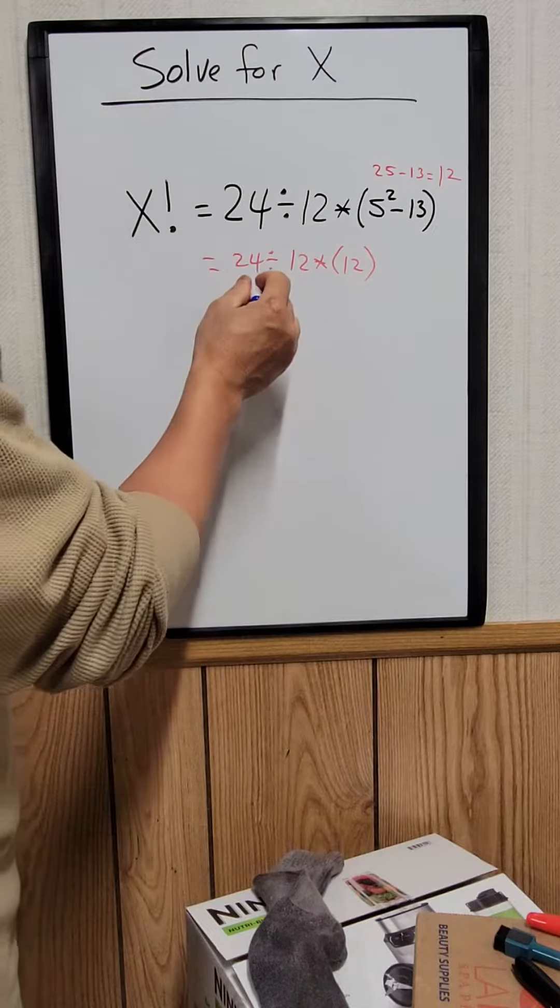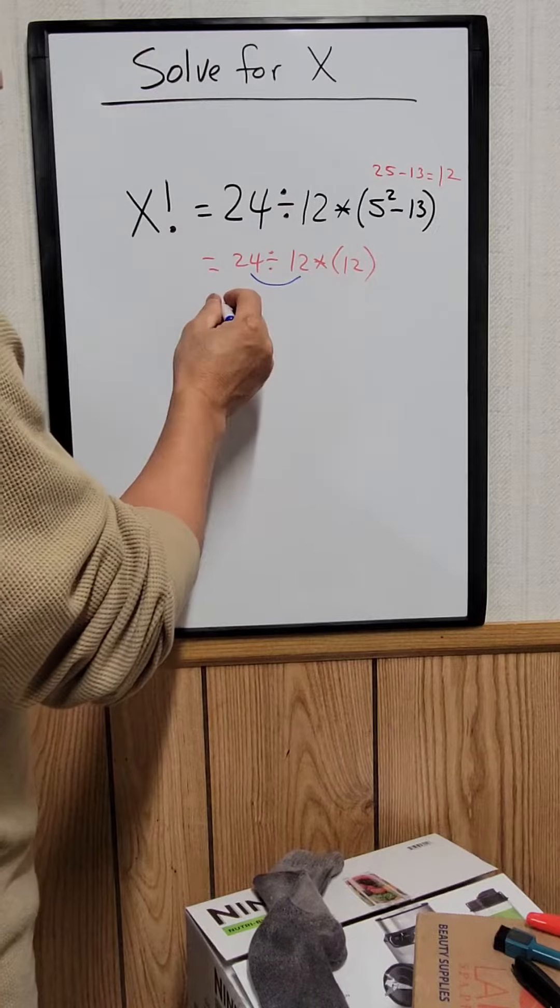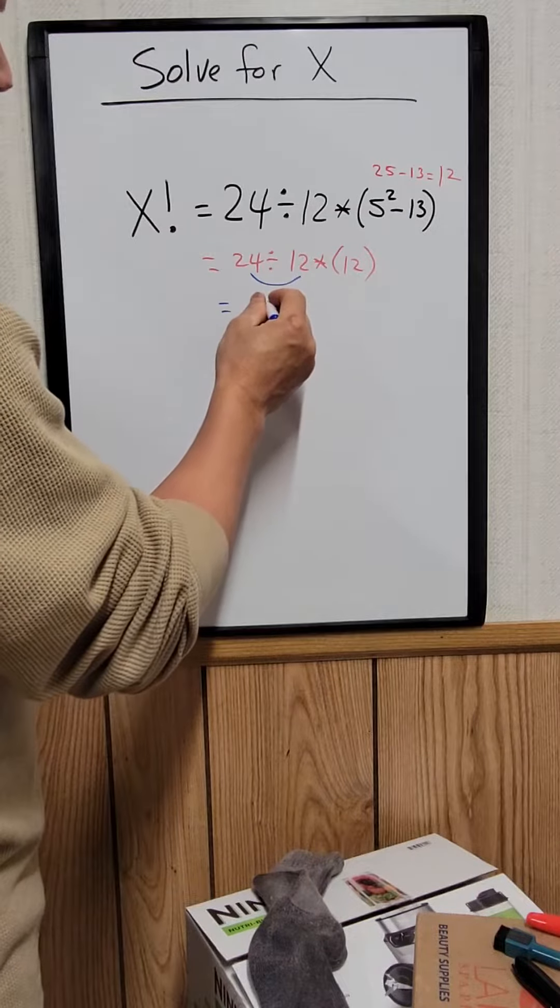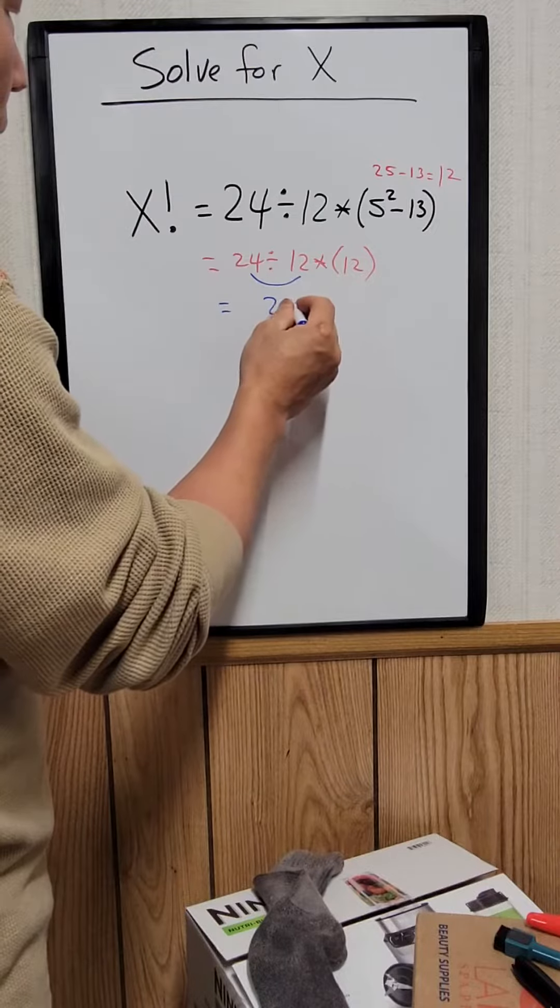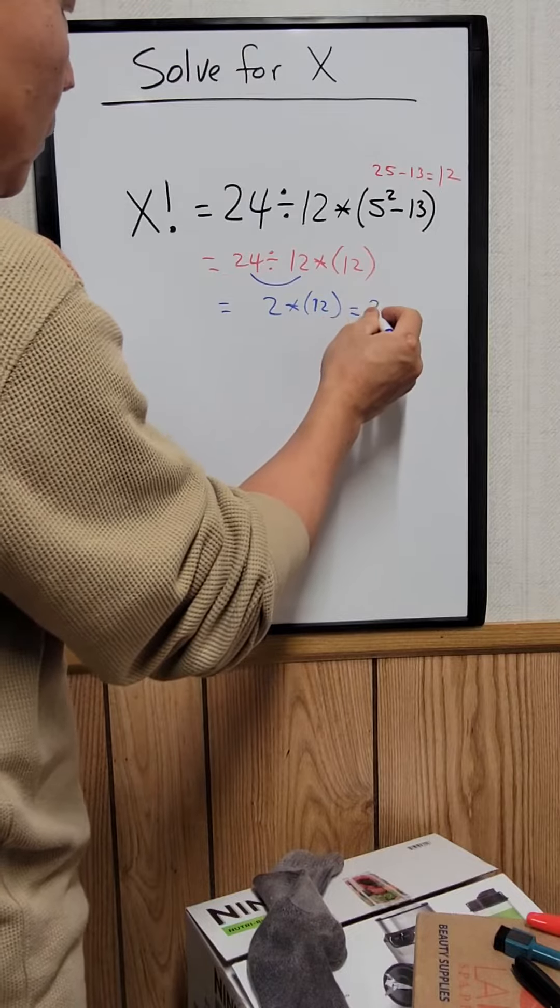And the next step is to divide 24 divided by 12, which equals 2. 2 times 12, which equals 24.